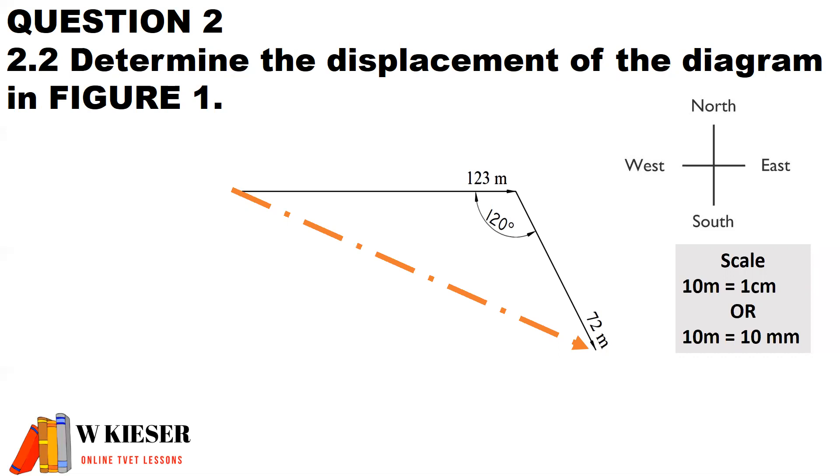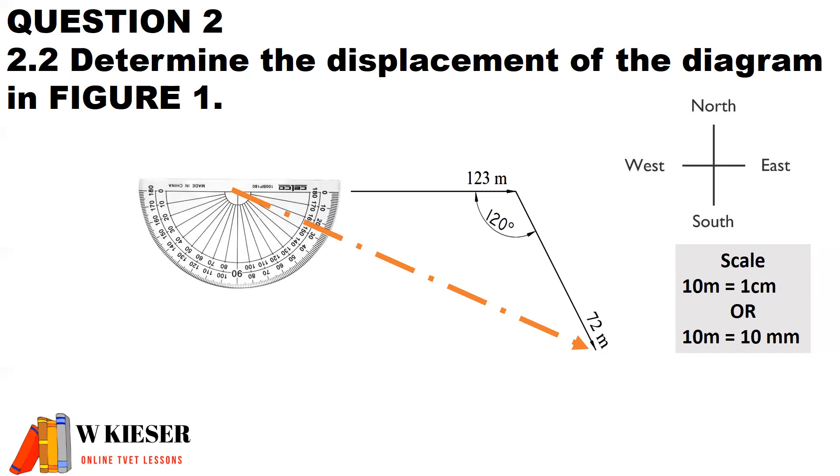Just remember that your scale of 10 meters is equal to one centimeter. If I take my protractor and I place it on the original vector, in other words east is my reference point, we'll notice that this displacement vector is sitting around about 21 degrees. Therefore, the total displacement is 171 meters, 21 degrees south of east.